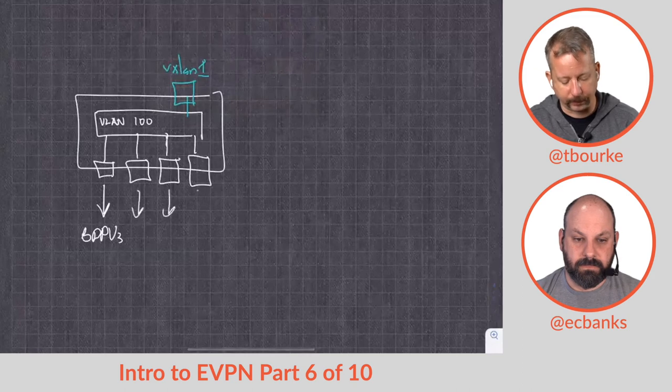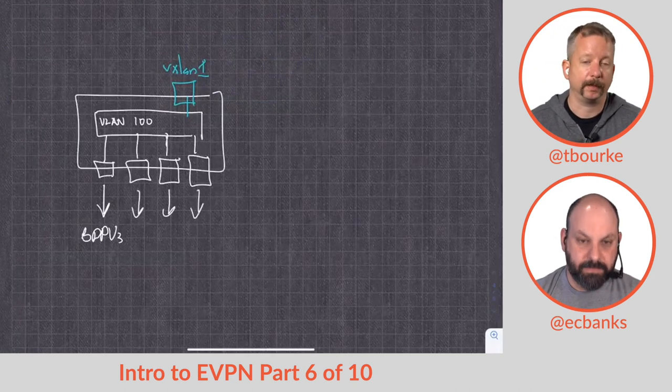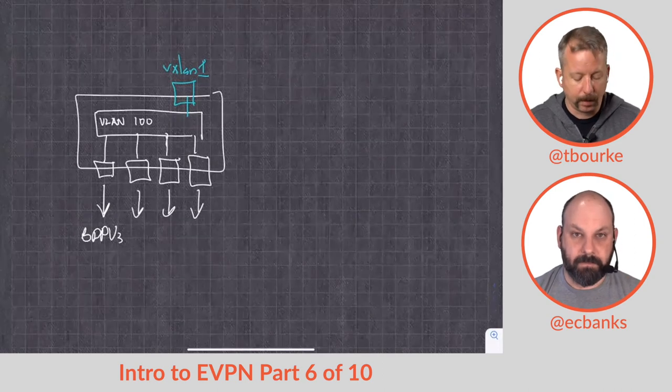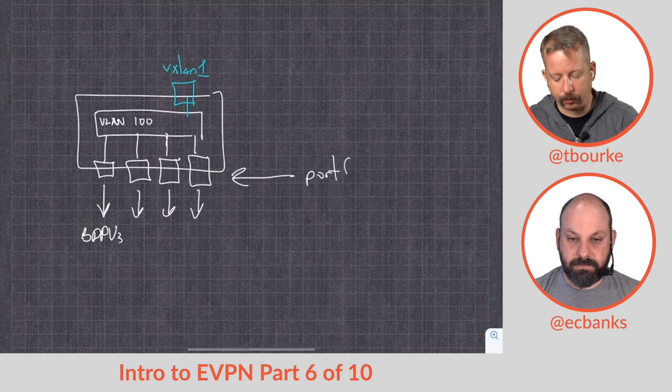Out the local interfaces, but we will not send a BPDU out of VXLAN 1. We've got a split horizon here. A lot of times what we're going to do is something equivalent to port fast.